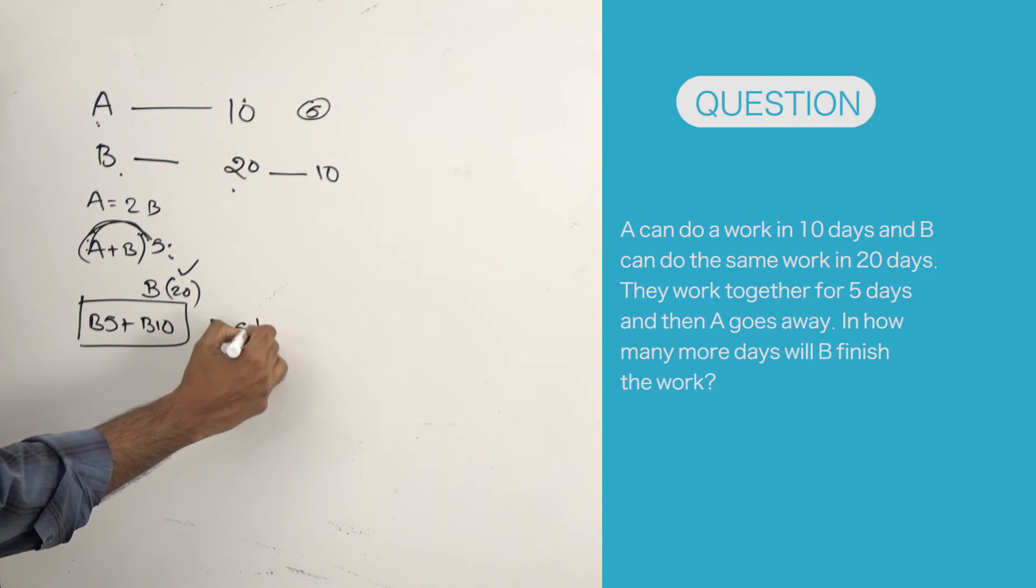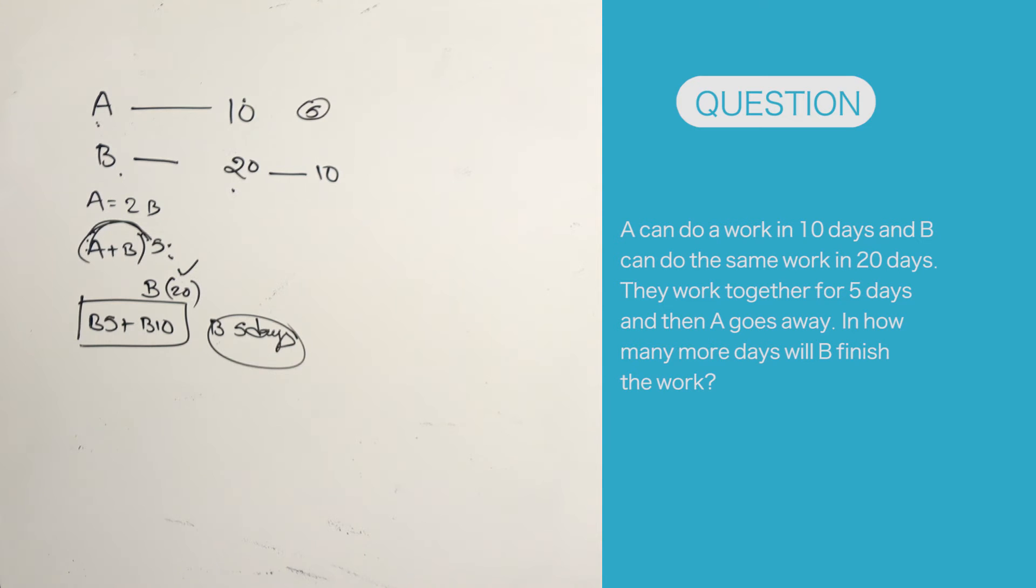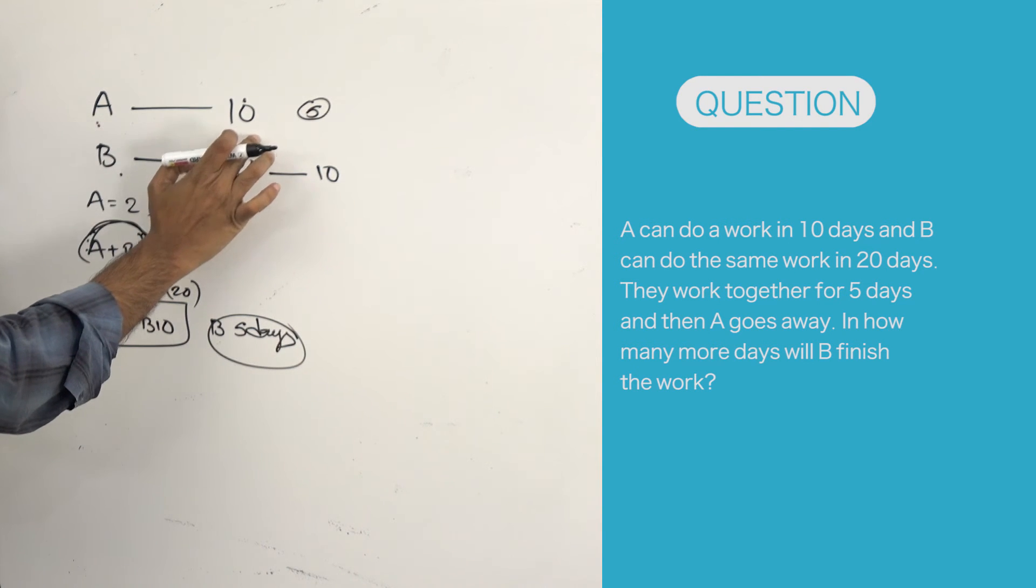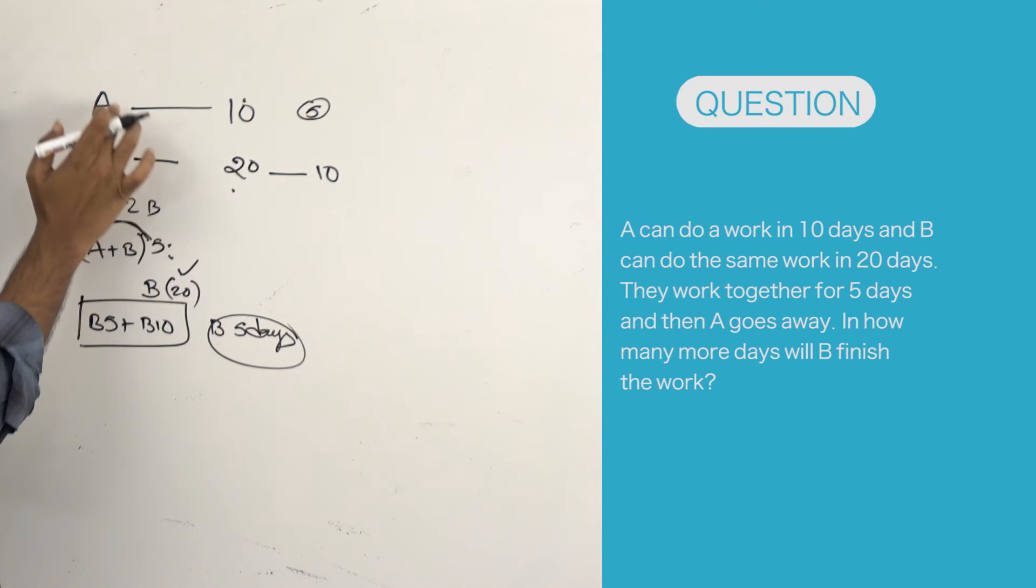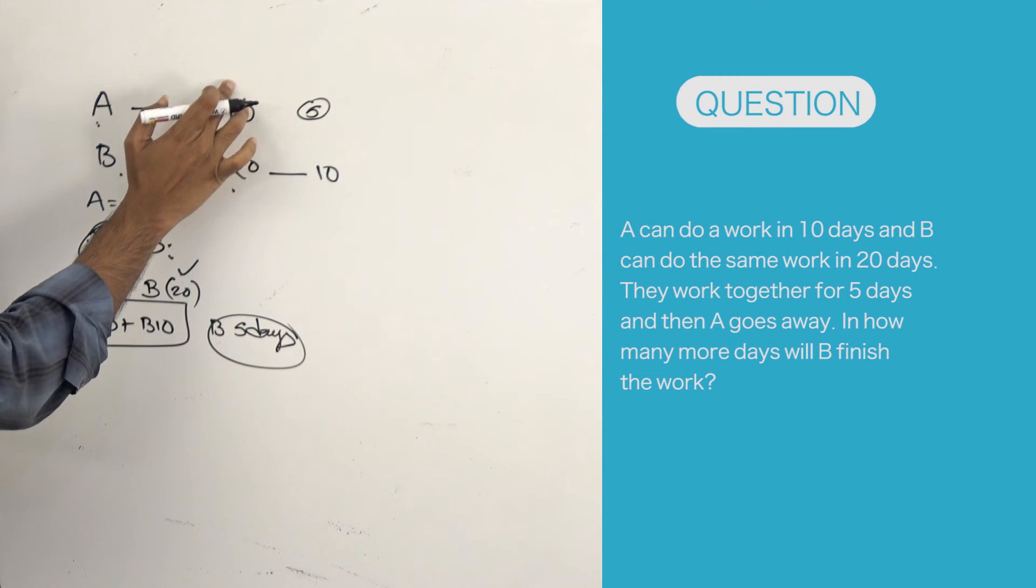Let me explain it once again. A can finish a work in 10 days. Same work can be done by B in 20 days. What does it mean? A is twice as efficient as B. Whatever work he does in 20 days, he is doing it in 10 days.